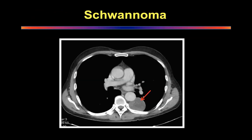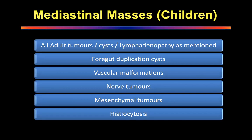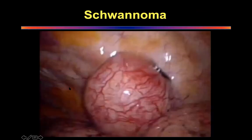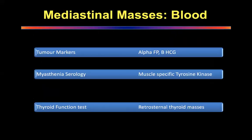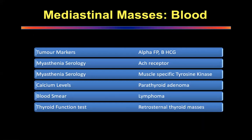In children, you must specifically talk about foregut duplication tumors, vascular malformations, nerve tumors, mesenchymal tumors, and histiocytosis — which is a particular disease affecting children.